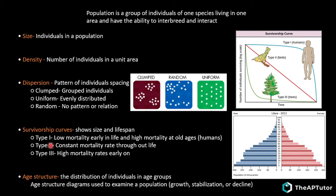Survivorship curves show lifespan and survival over time. Type I has low mortality early in life and high mortality at old age - consistent with humans, whose population doesn't decrease much until old age. Type II has a constant mortality rate throughout life, like birds dying at the same rate over time. Type III has high mortality rates early on but low mortality rates later, like trees.